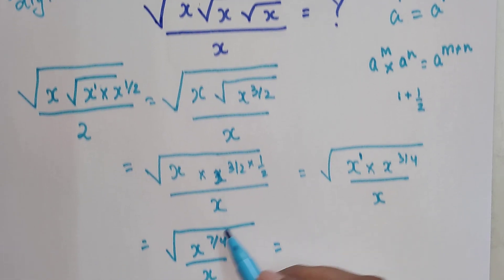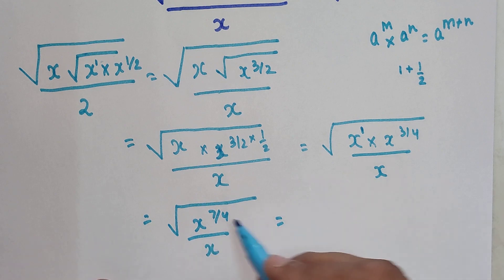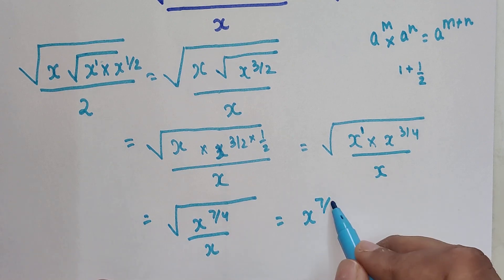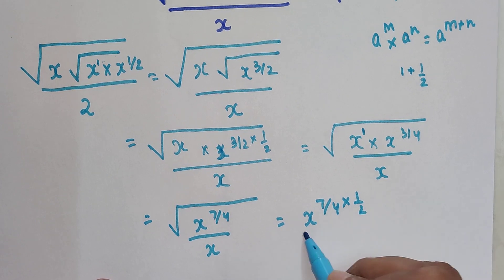Now let's take this index on this side. So that gets you x raised to 7 by 4 into 1 by 2 upon x. That gets you x raised to 7 upon 8 upon x.